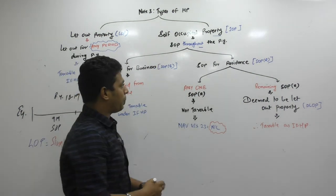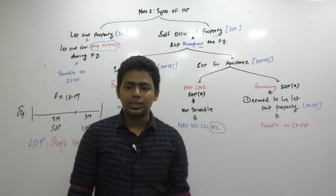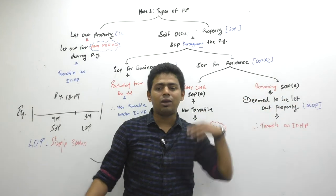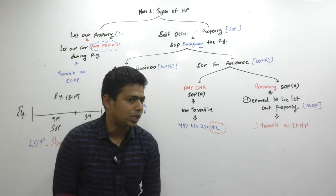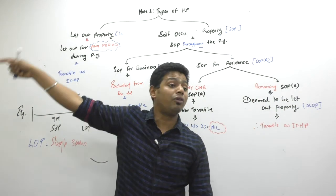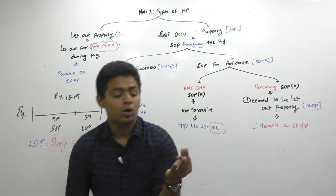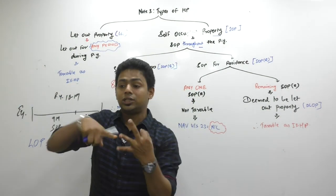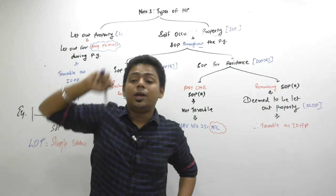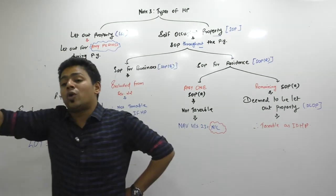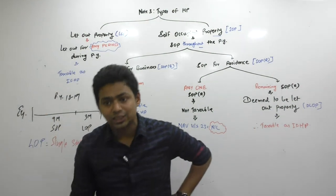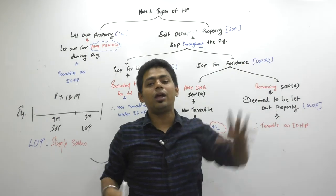There can be two purposes to occupy the property: self-occupied for business and self-occupied for residence. When you become a chartered accountant, you will have one house property where you stay and one office where you run your profession. One property is exempt in law because every assessee is allowed one house. But the other house — will it become taxable under house property? Answer is no. Because the charging section's third condition says: such house property should not be used for own business or profession. If it is used for own business, income derived from that property will be taxed not under house property but under PGBP.